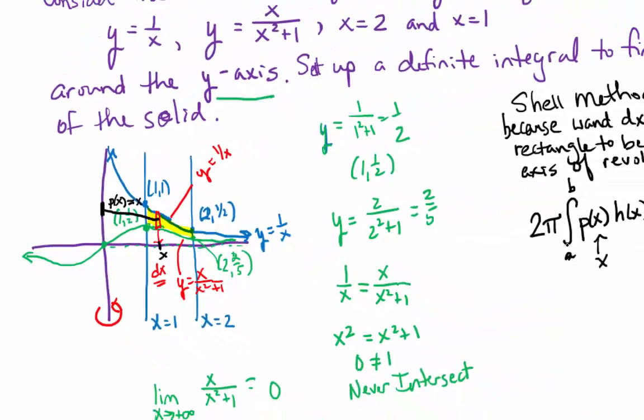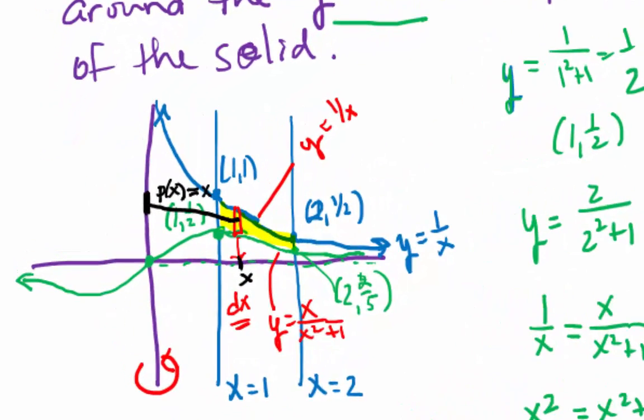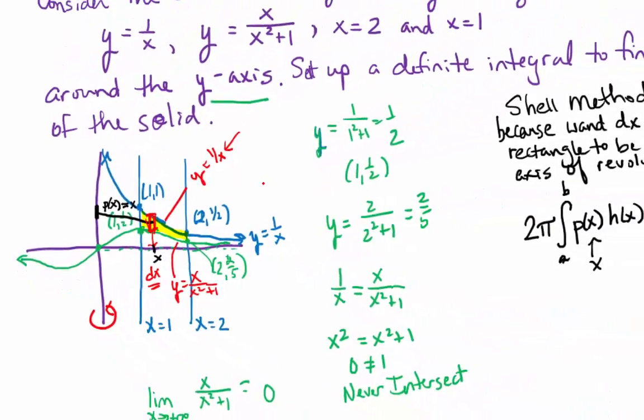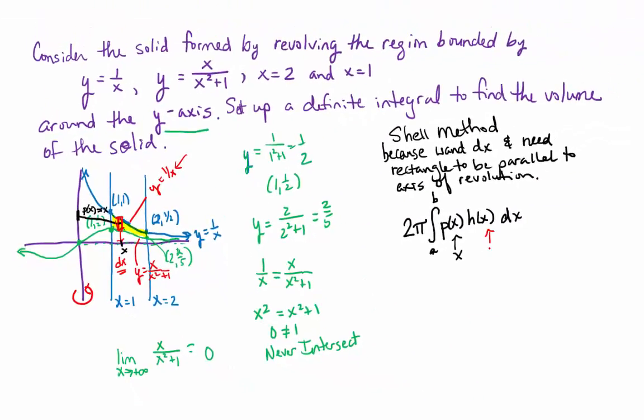H of x is, in the shell method, h of x is the challenge. So I don't know if you can see in that tiny little rectangle that I have drawn in there, but the top of it is touching y equals 1 over x. And the bottom of it does not go down to the axis. So I can't just say the height is 1 over x. That would give you a rectangle that's too tall. I need the actual height of the rectangle. But in this case, we have to subtract to get the height. Top minus bottom. So the height of this rectangle, h of x, is going to be 1 over x minus x over x squared plus 1.